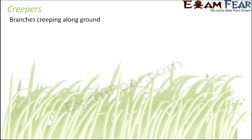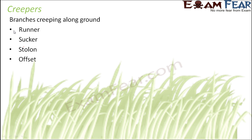In case of a trailer, the branches always trail above the ground. But in creepers, they do not always creep above the ground. Sometimes they creep below the ground and then suddenly emerge out of the ground. In creepers, we have four types: runner, sucker, stolon and offset. These are the four types of creepers that we will be discussing now.